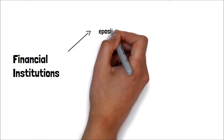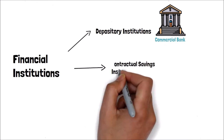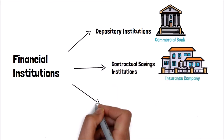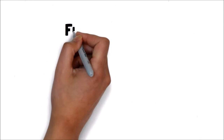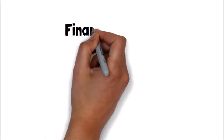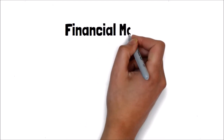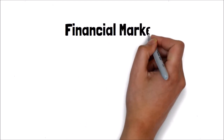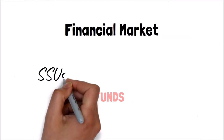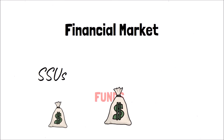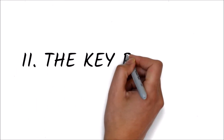The three categories are: depository institutions, contractual savings institutions, and investment intermediaries. Financial market is a type of marketplace that provides an avenue for the sale and purchase of assets such as bonds, stocks, foreign exchange, and derivatives. It gathers money from SSU and transfers it to DSU.